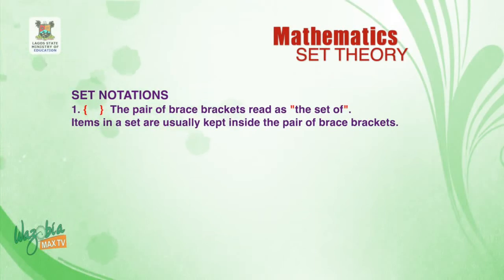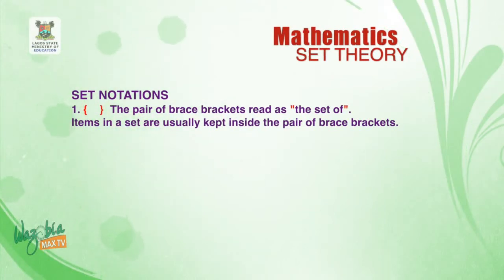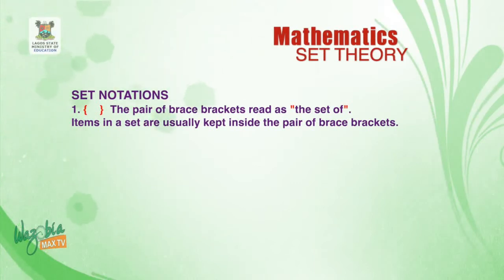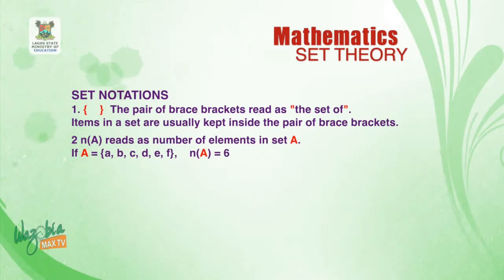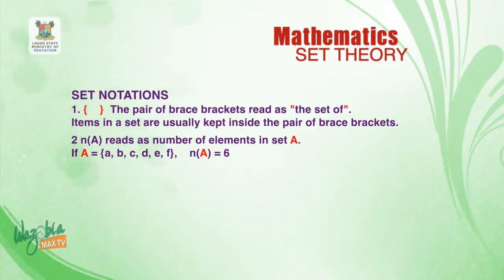Set notations: number one — brace brackets, also called wobbling brackets. Unlike in English where they are used as parentheses, here we use brace brackets in which all the elements of a given set are kept. Number two — number of elements in a set. For example, set A has elements a, b, c, d, e, f, making a total of six, so the number of elements in set A is six.